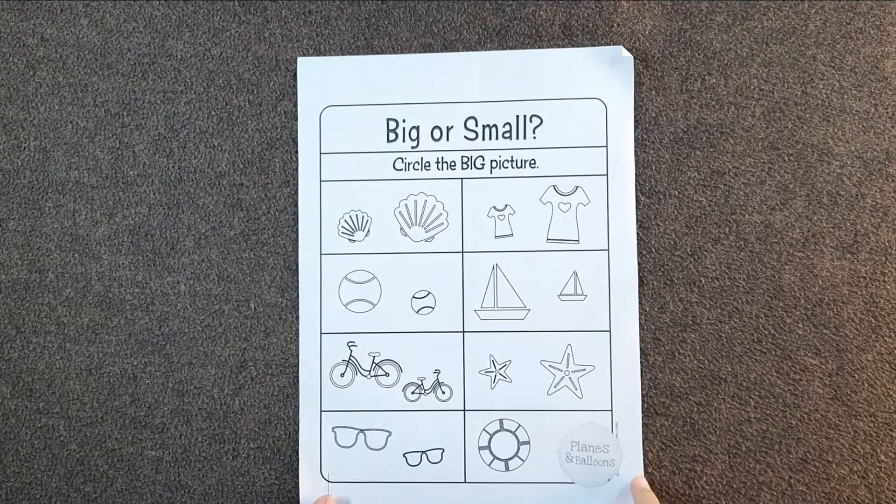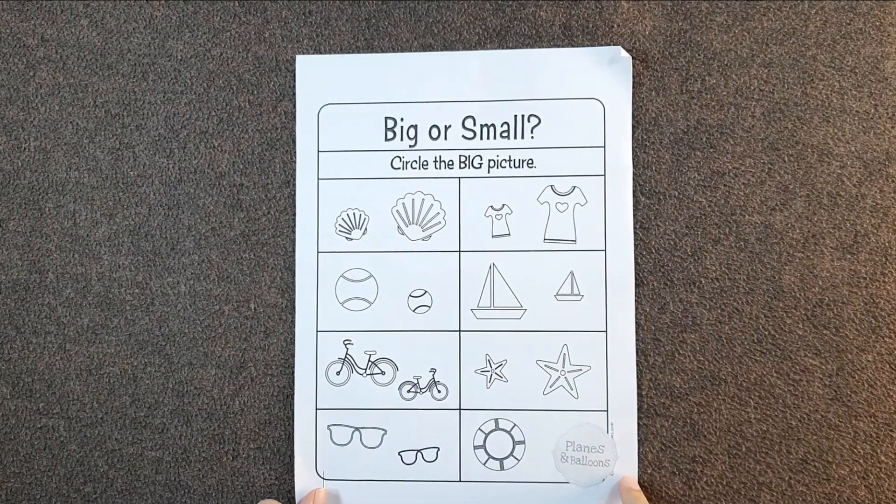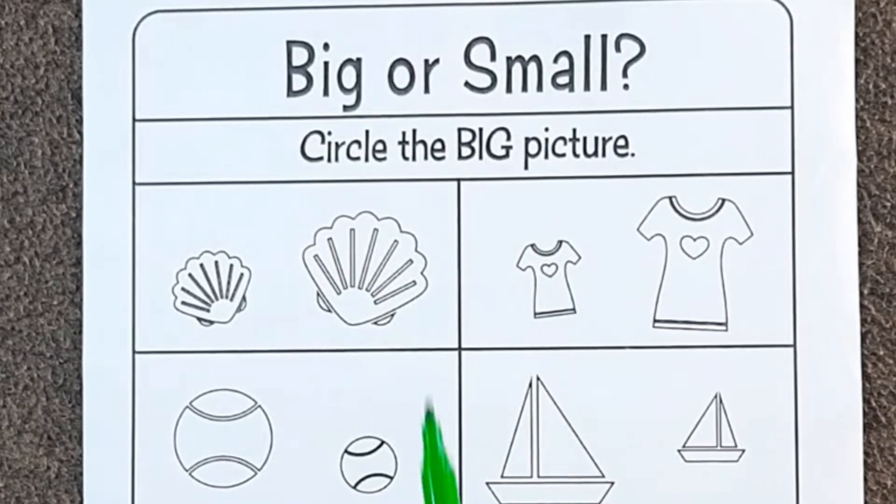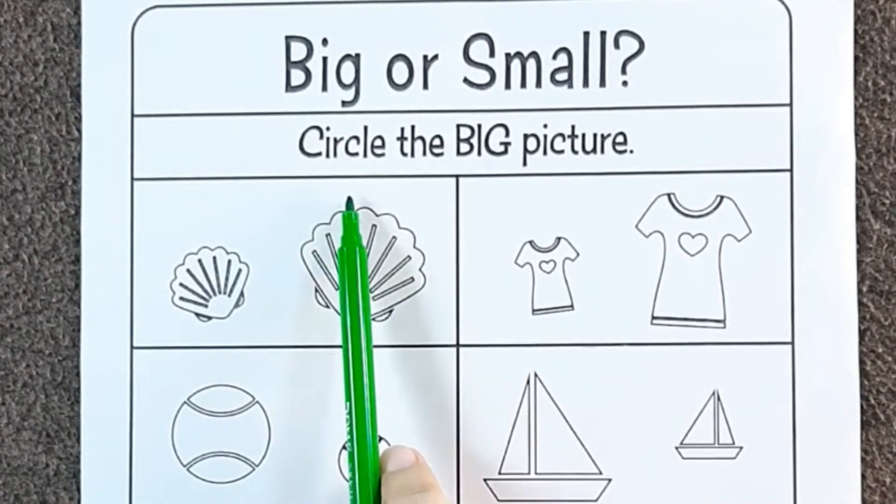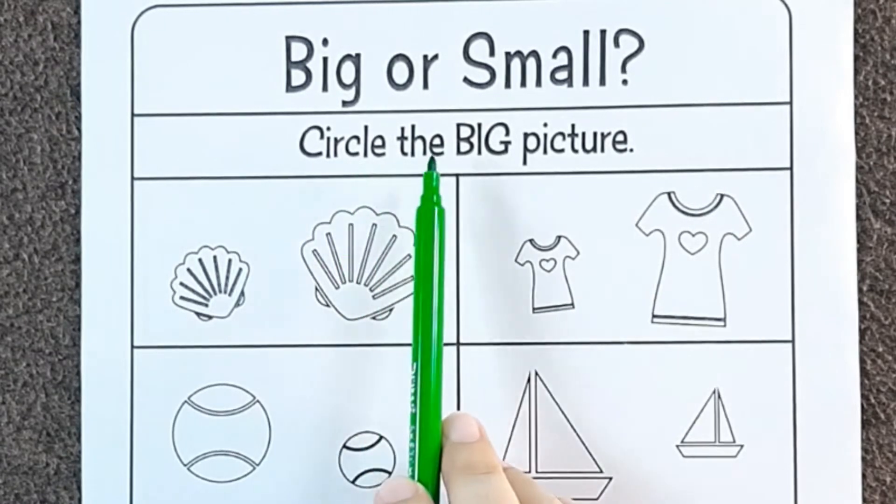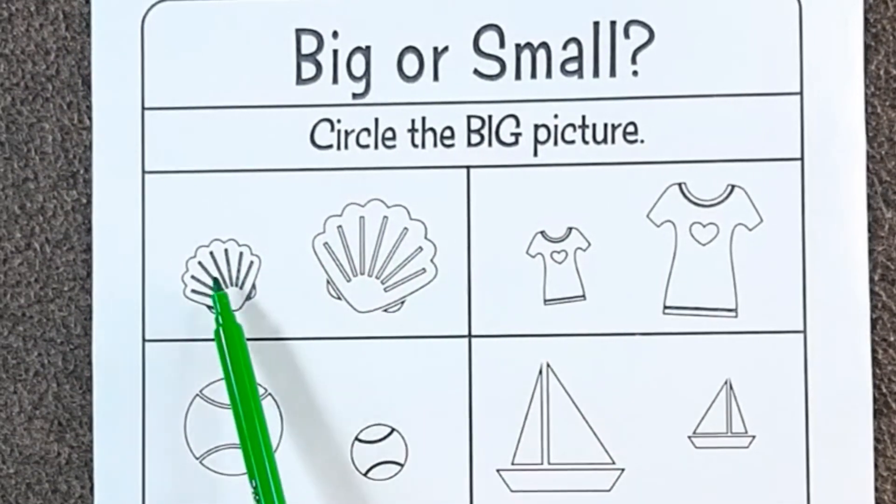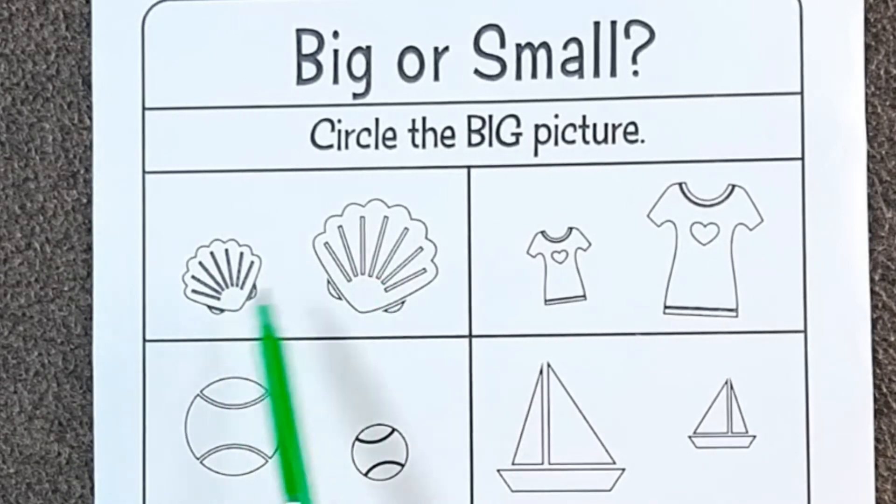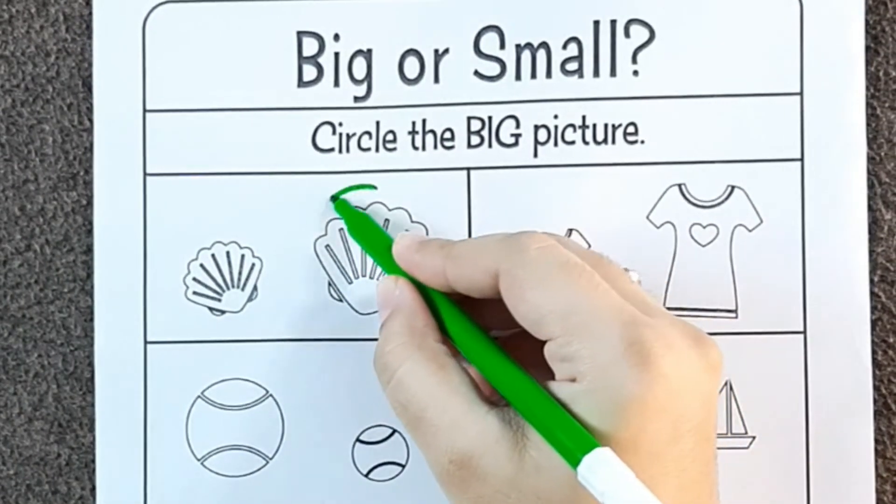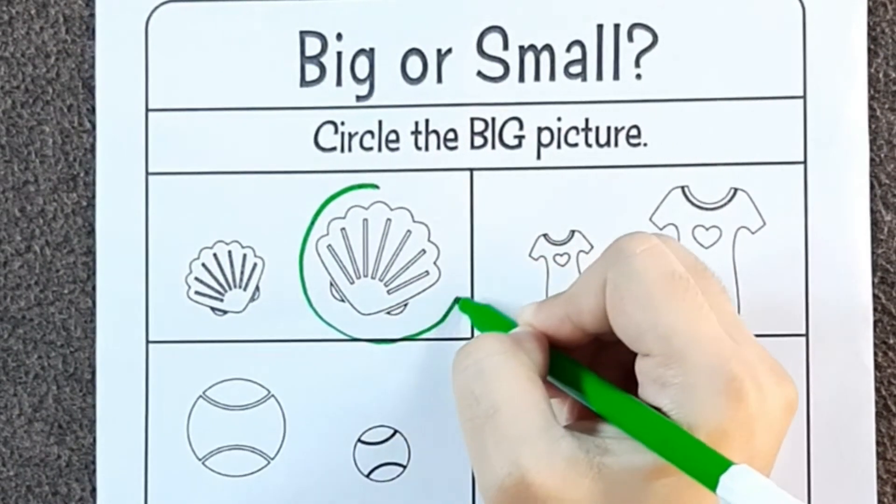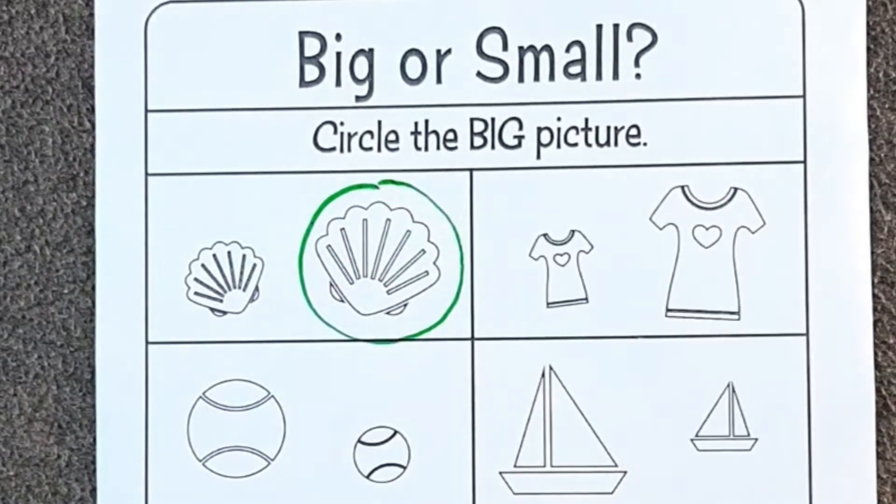Let's solve a worksheet on big and small. Look, as you can see it is written circle the big picture. So tell me, which is the big from these two? This fan is bigger. Okay, next.